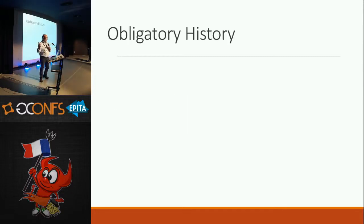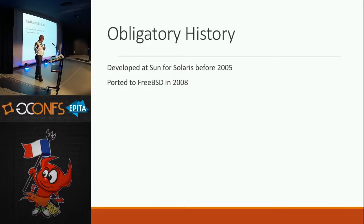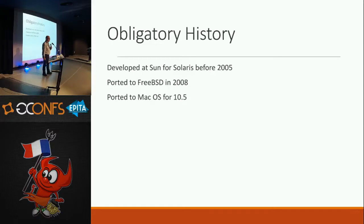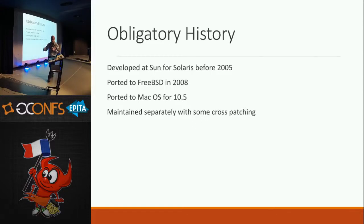So this is my histoire obligatoire — my obligatory history. DTrace was originally developed by a company called Sun. Back in 2005 was the first public release you could get in Solaris, but it was developed over time before that. First ported by John Burrell to FreeBSD in 2008. It's also been ported to macOS, so if you happen to be running a glowing Apple, you also have DTrace, although it may or may not be completely enabled. Since its initial forays, it has been maintained separately with some cross-patching between different versions, an open source code base modified by different groups with some coordination, but not a ton of it.